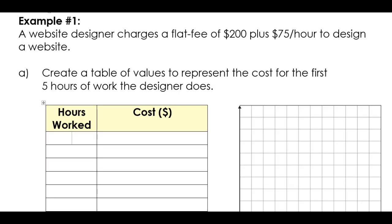So here's an example of a description that you can use to create a table of values and then plot a graph. A website designer charges a flat fee of $200 plus $75 per hour. So we've got a fixed value, an initial value, plus a rate of change here. And that's charged to design a website. So if you're in business for yourself, you want to keep track of how many hours you're working and how much money people owe you because that's your income.